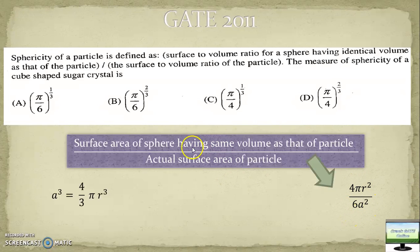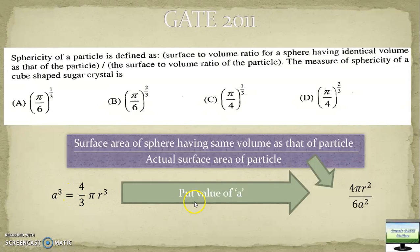Surface area of sphere is 4πr². It says this sphere has same volume as that of particle. The particle is cube, so a³ equals 4/3 πr³. So you got one relation, and this will be your sphericity. Divided by actual surface area of cube, which is 6a².